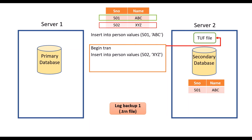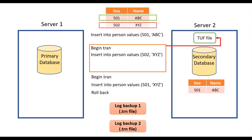At this stage if this transaction is rolled back and then a log backup is performed, before restoring it at the secondary database SQL Server will fetch the uncommitted transaction from the tough file and check with the log backup that is going to be restored at the secondary database, since it contains information about this uncommitted transaction. Since it is being rolled back, this is not going to be returned at the secondary database. If this transaction is committed, SQL Server will check with the tough file and since this new log backup contains information that this transaction is committed, it will be returned to the secondary database. This is how it functions, and it ensures that no uncommitted transaction is read by the user in the secondary database.